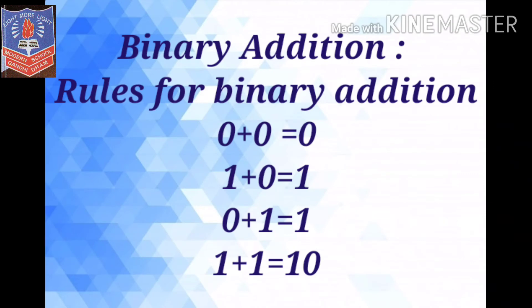Now after learning conversions, we will move to mathematical calculations. Like in maths you do addition, subtraction, multiplication, and division — here we will learn binary addition, binary subtraction, and binary multiplication. For binary addition, some rules must be followed: 0 plus 0 is 0, 1 plus 0 is 1, 0 plus 1 is 1, but 1 plus 1 is 10.